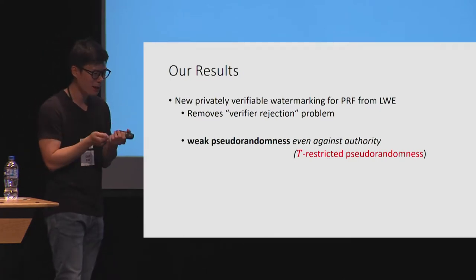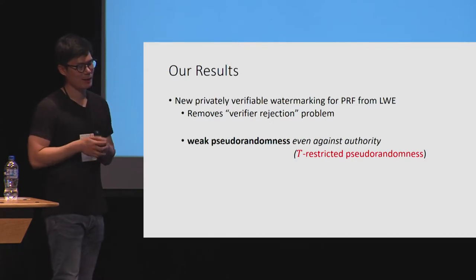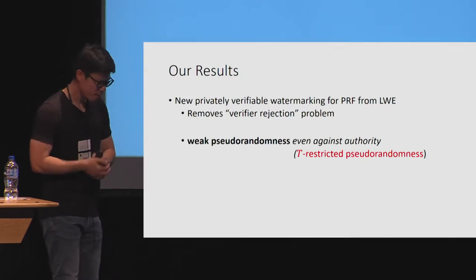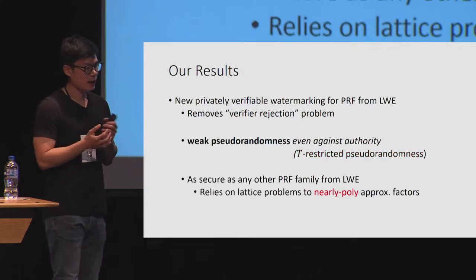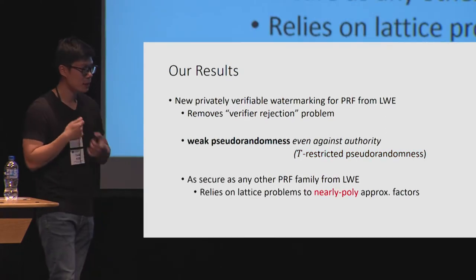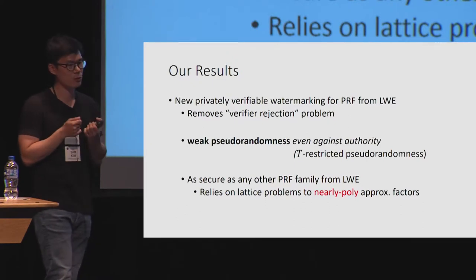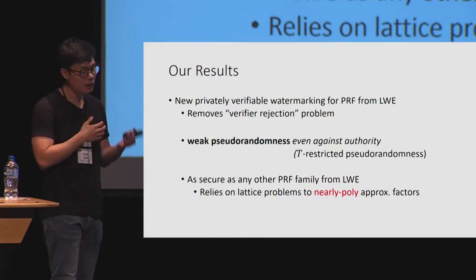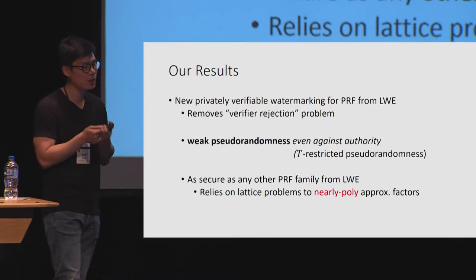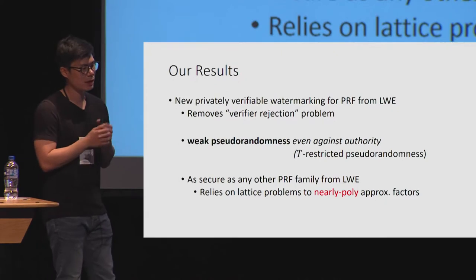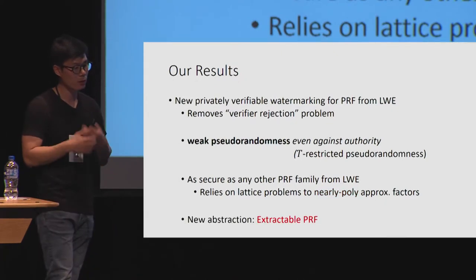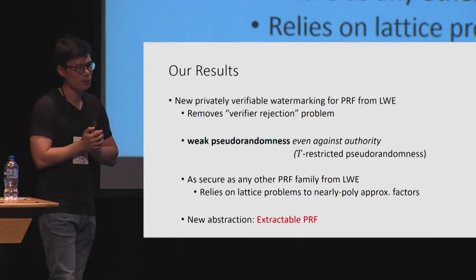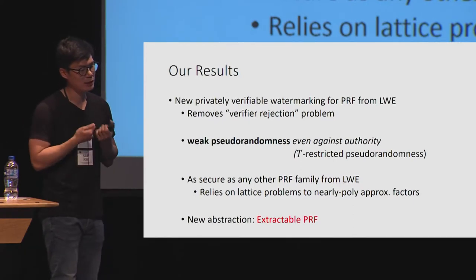The PRF family that we construct actually satisfies a stronger security definition called T-restricted pseudorandomness; I refer to the paper for the specific definition. A nice property of our construction is that the security relies on a much weaker variant of the LWE assumption compared to previous works. The security of our construction relies on the hardness of approximating worst-case lattice problems to only nearly polynomial approximation factors, while in previous works sub-exponential approximation factors were needed. Along the way, we defined a new abstraction called extractable PRF, which we believe is a very natural notion of independent interest for future works.